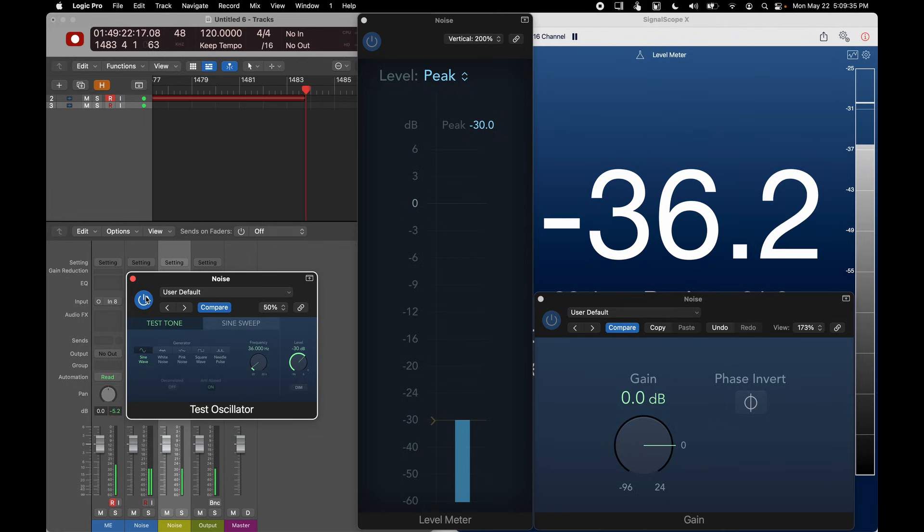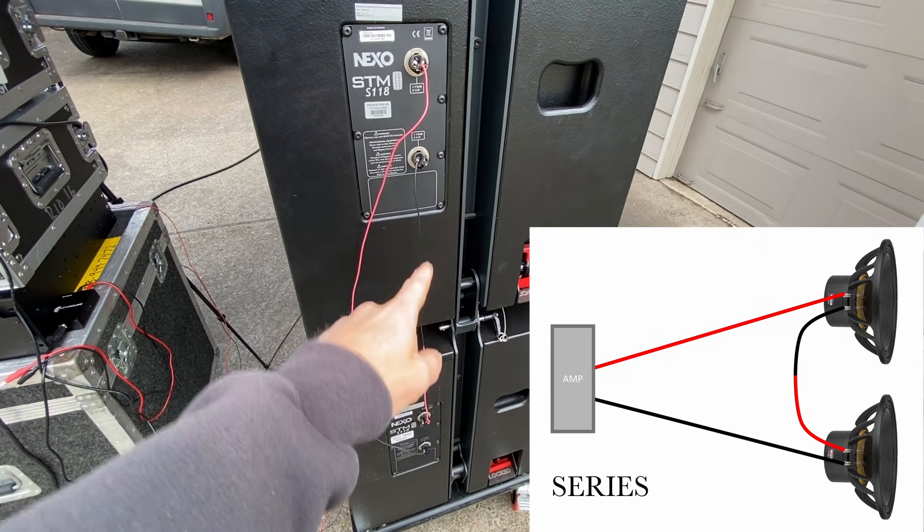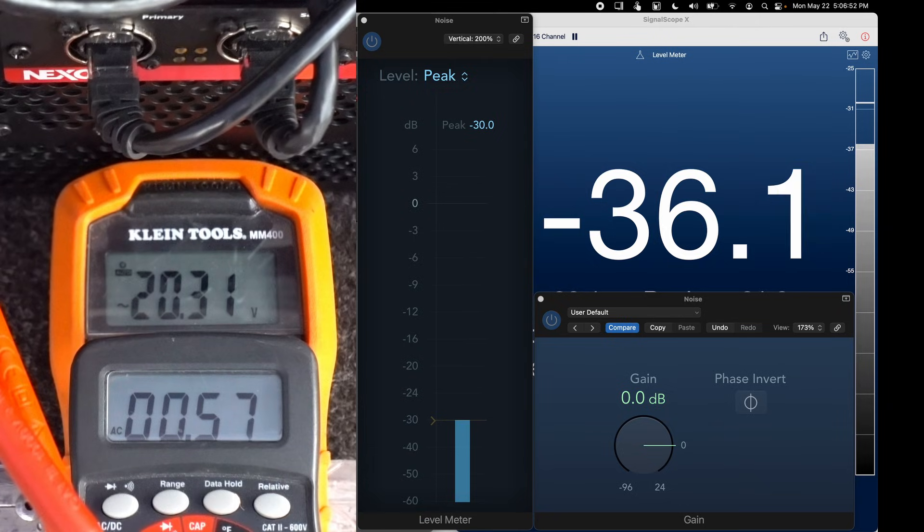So let's remember that with one sub connected, the mic reads about minus 36 dB when the software output is at minus 30. So I've now switched our cabling around, so you can see that our two subs are now connected in series, and we can see that the mic still reads minus 36 dB. The voltage from the amplifier stayed about the same, but the current decreased by half.